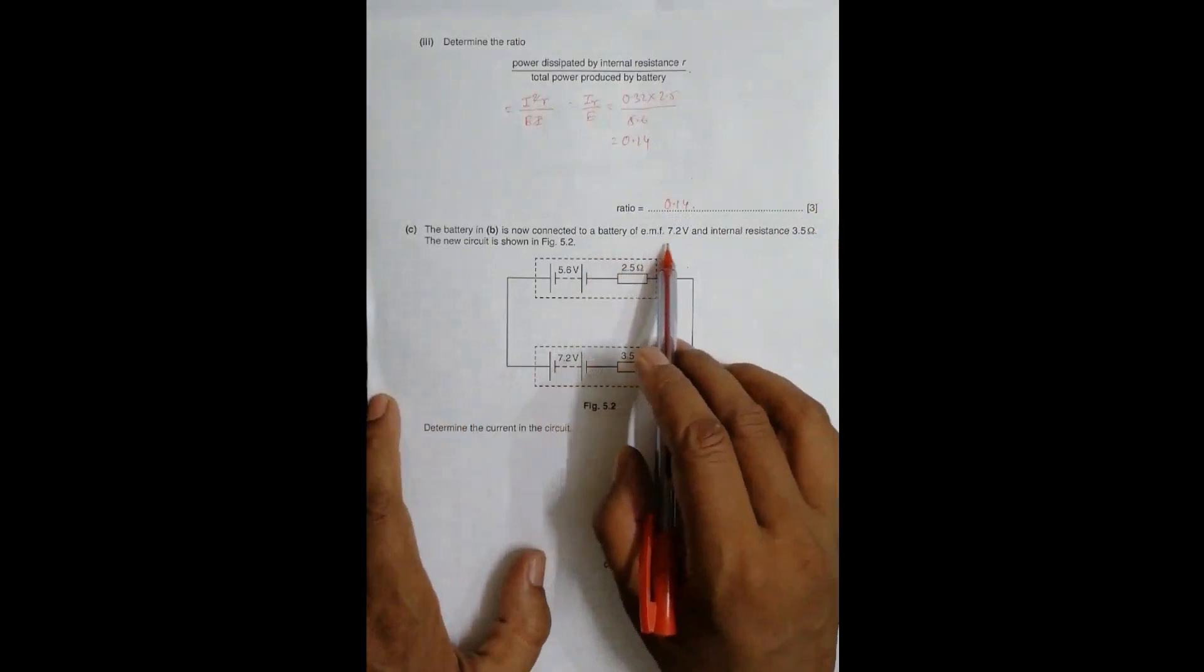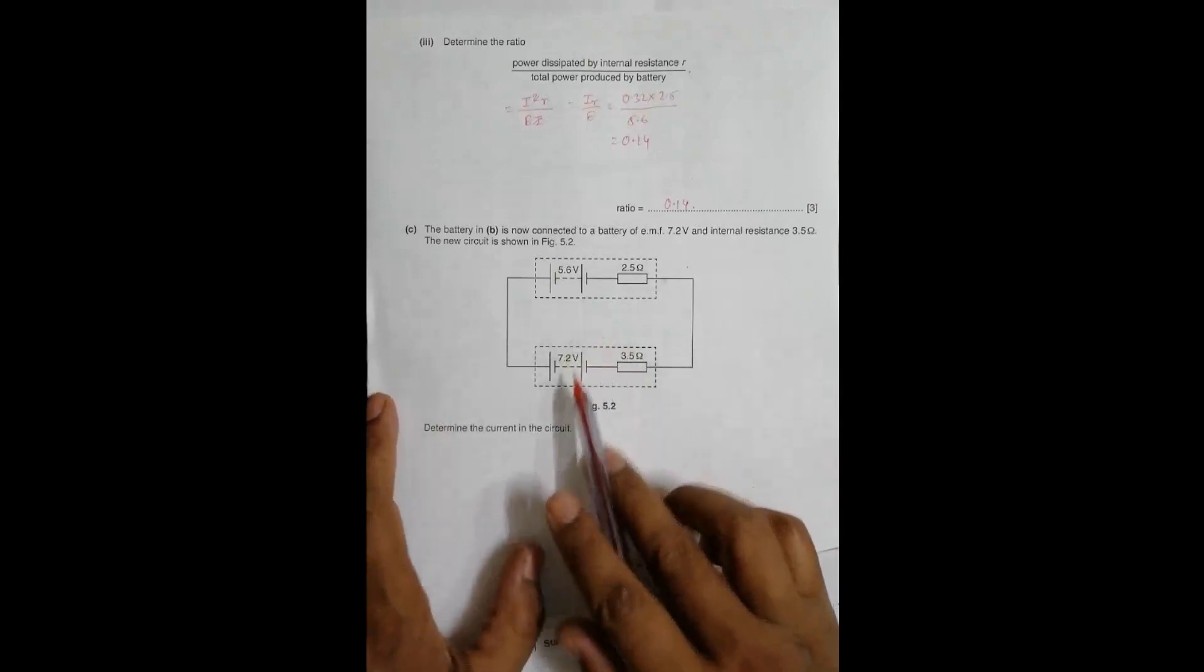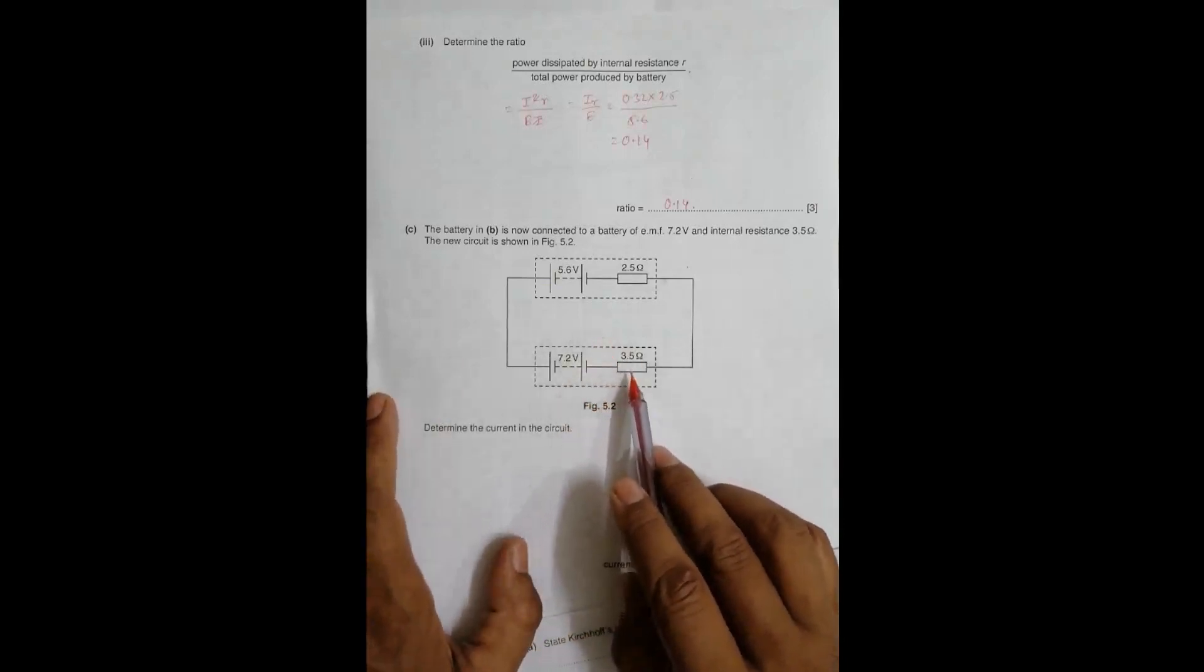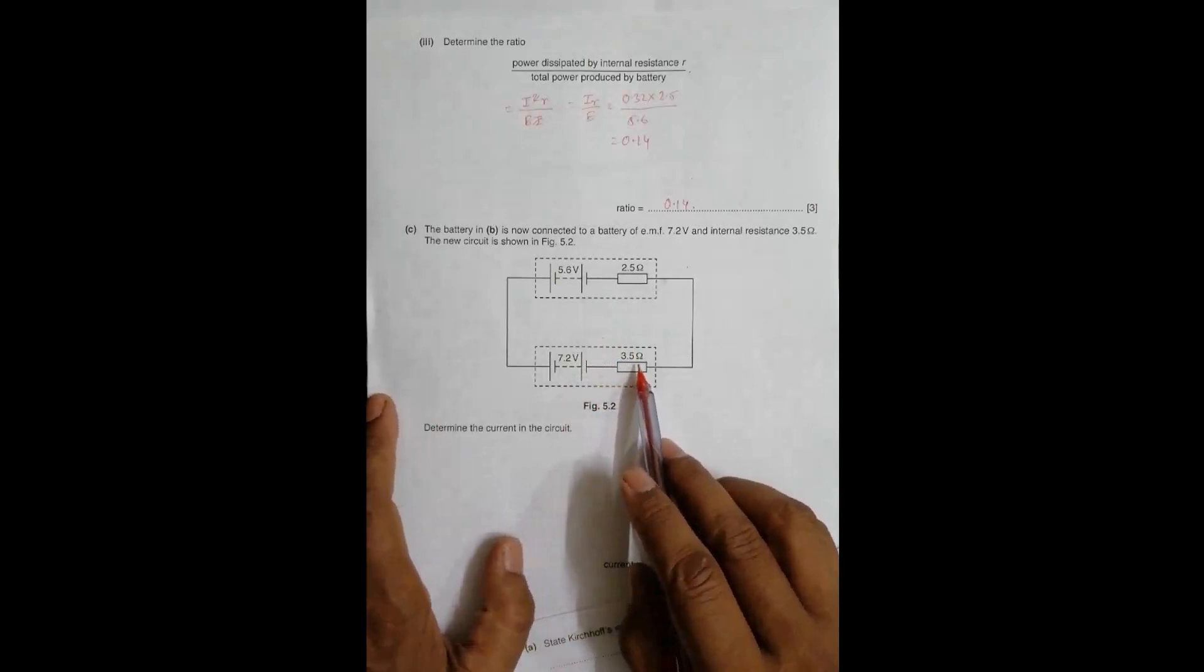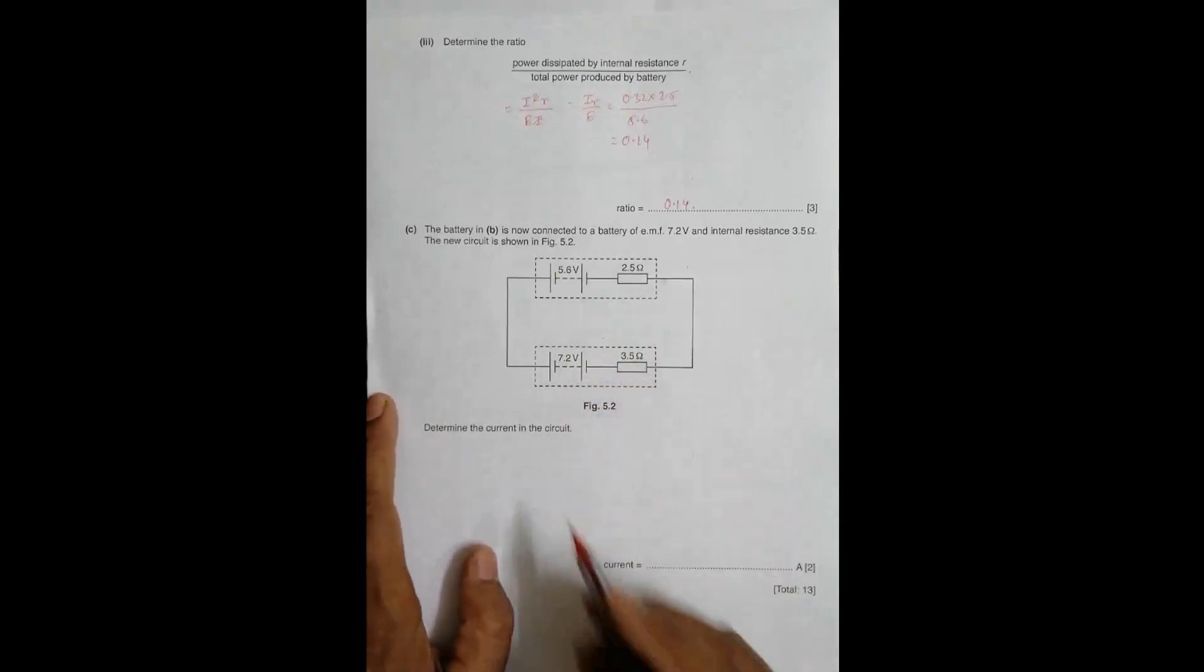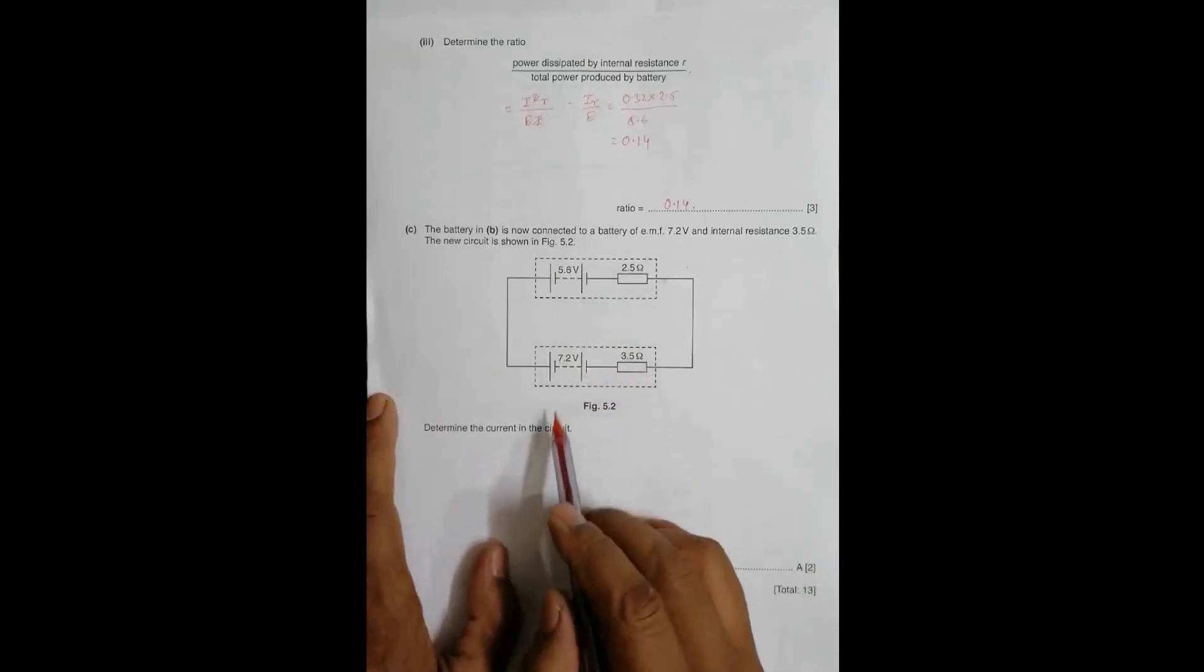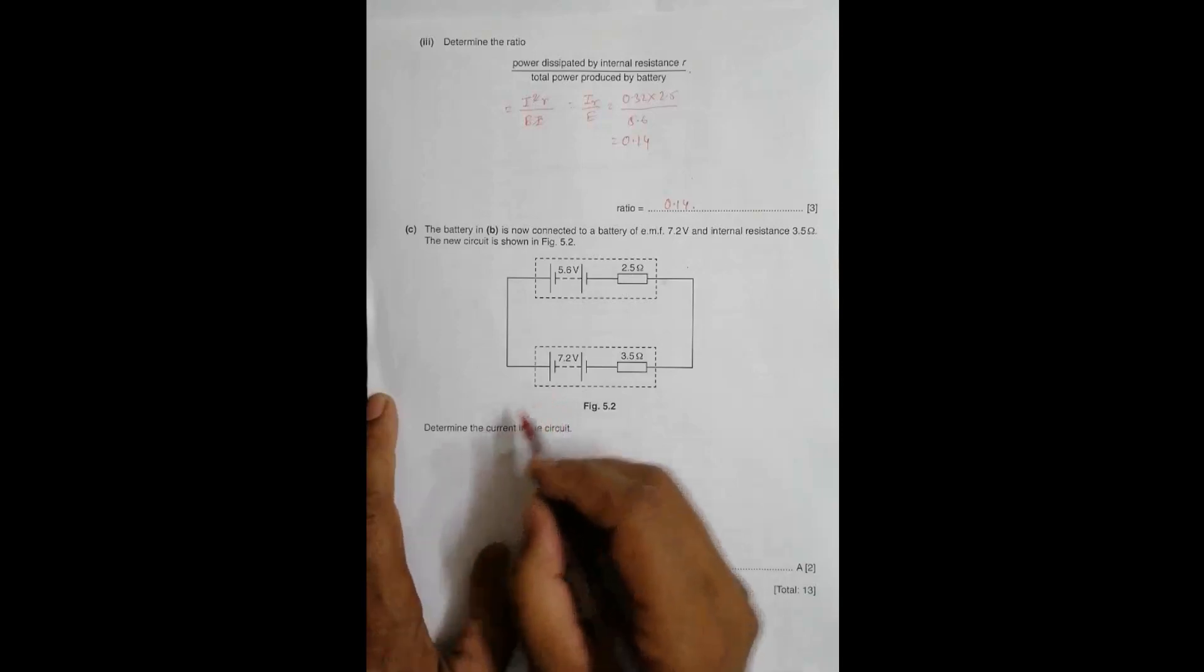Next question: The battery in part B is now connected to a battery of EMF 7.2 volts, which itself has an internal resistance of 3.5 ohms. We need to determine the current in the circuit.